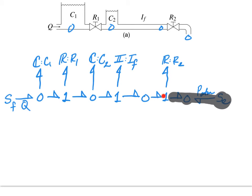We have a train of bonds. We could connect this R element directly to the one junction. There are no other further simplifications that can be conducted.